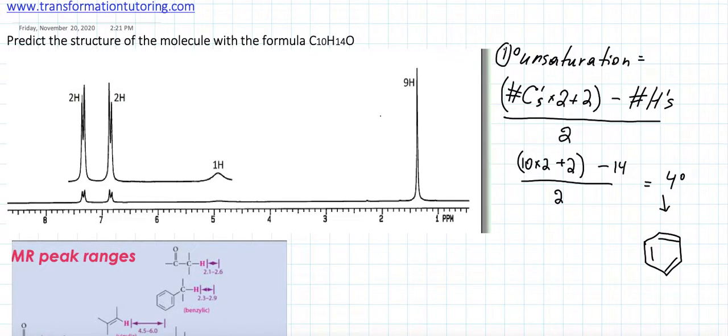After we write down our degrees of unsaturation, we will write out our HNMR chart, looking at every signal. The first signal, I'm going to call it A, is 9 hydrogen. It looks like one peak. One peak is called a singlet and it's around 1.4 ppm.